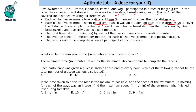The total time taken is a three-digit number in minutes, and the average speed for each of the five swimmers is a positive integer. The race is said to be complete when all participants finish the race. So the first question is: what can be the maximum time in minutes to complete the race?